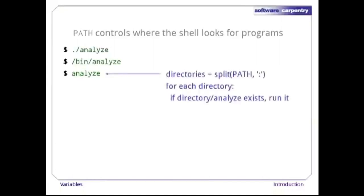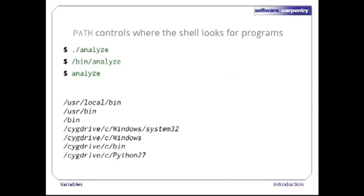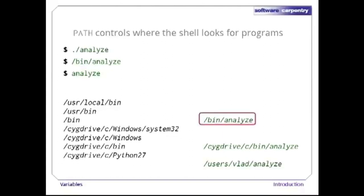To show how this works, here are the components of PATH broken out one per line. On our computer, there are actually three programs called analyze in three different directories. Since the shell searches the directories in order, it finds the one in /bin, not either of the others. Notice that it will never find the program /users/vlad/analyze since the directory /users/vlad isn't in our PATH.